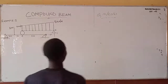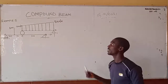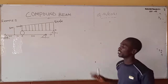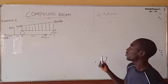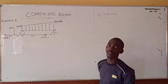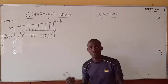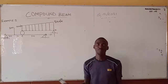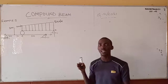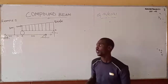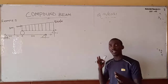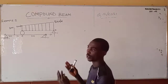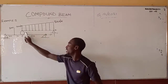Welcome to VT Engineering class. In today's class we'll be looking at a compound beam and how to calculate the reaction at each support. A compound beam is a smaller component of beams fastened and assembled together to function as a single unit. They are usually assembled together by internal hinges — you can see this is two beams joined together by an internal hinge.